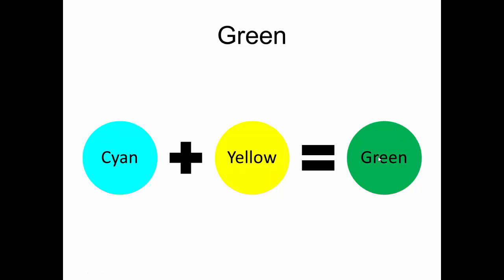So if you are wondering, how do I make green without blue and yellow? Well, cyan plus yellow gives you green.